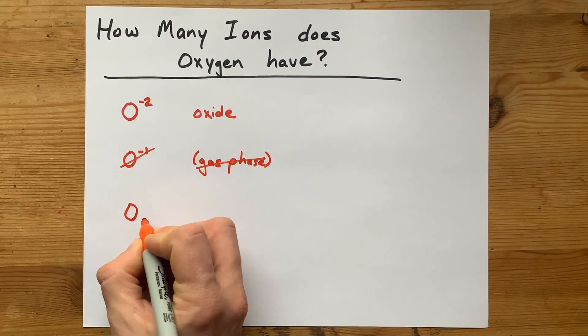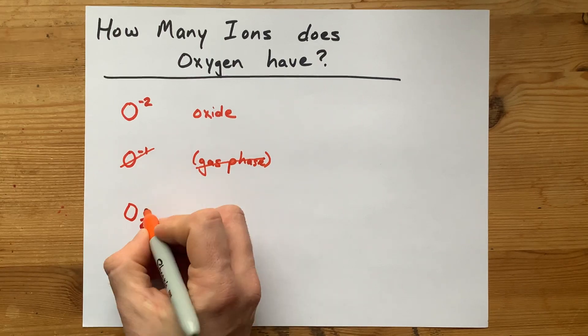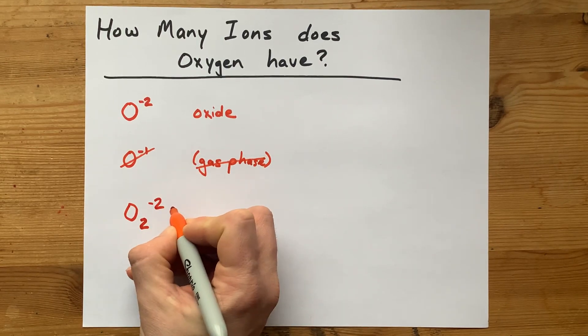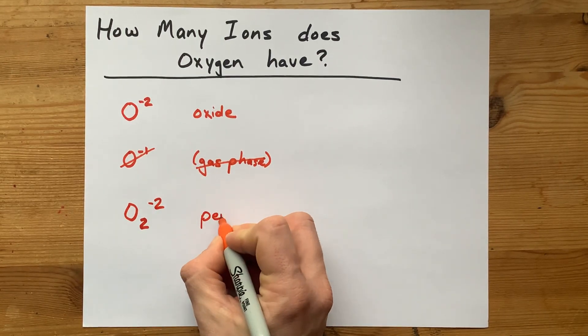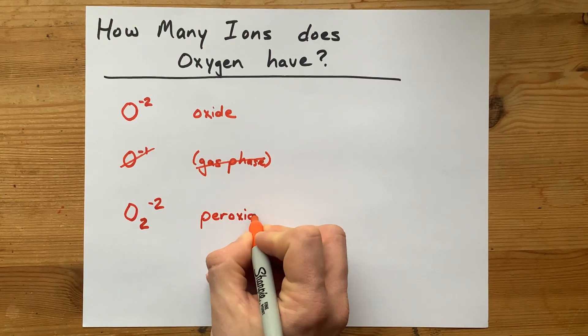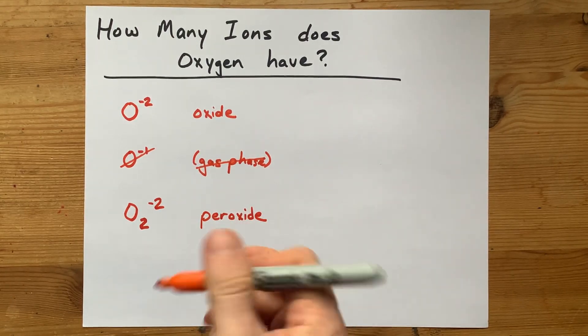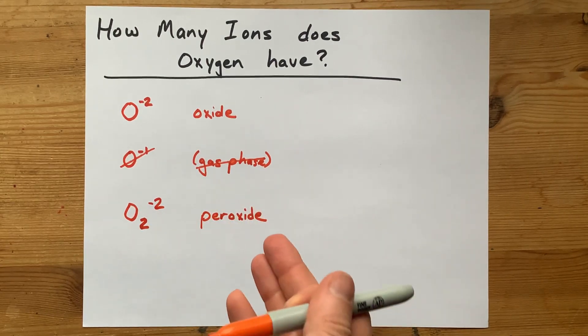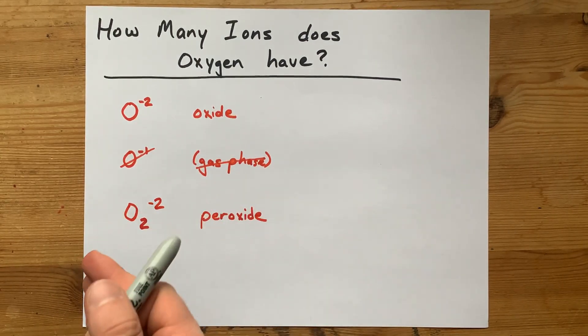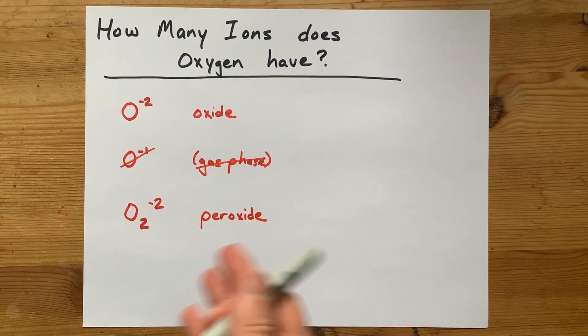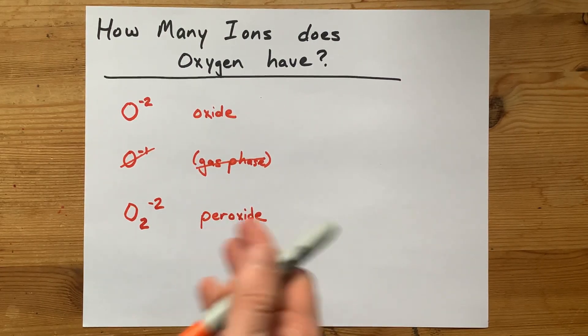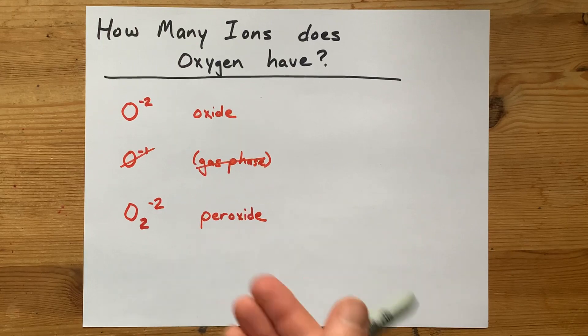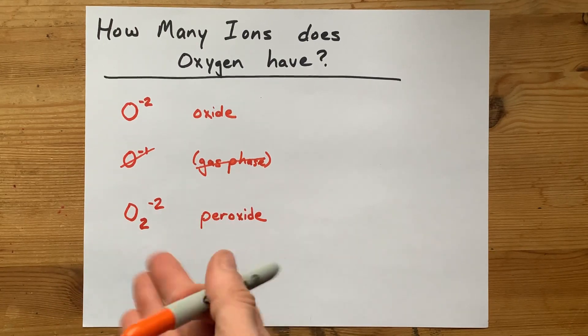Another one that comes up a lot is O₂ with a minus two charge. This is what's commonly known as peroxide. It's similar to what you would find in hydrogen peroxide, but I wouldn't call that an ion necessarily. Sodium peroxide is what you get when you burn sodium in a pure oxygen environment. You can create these. They are real.